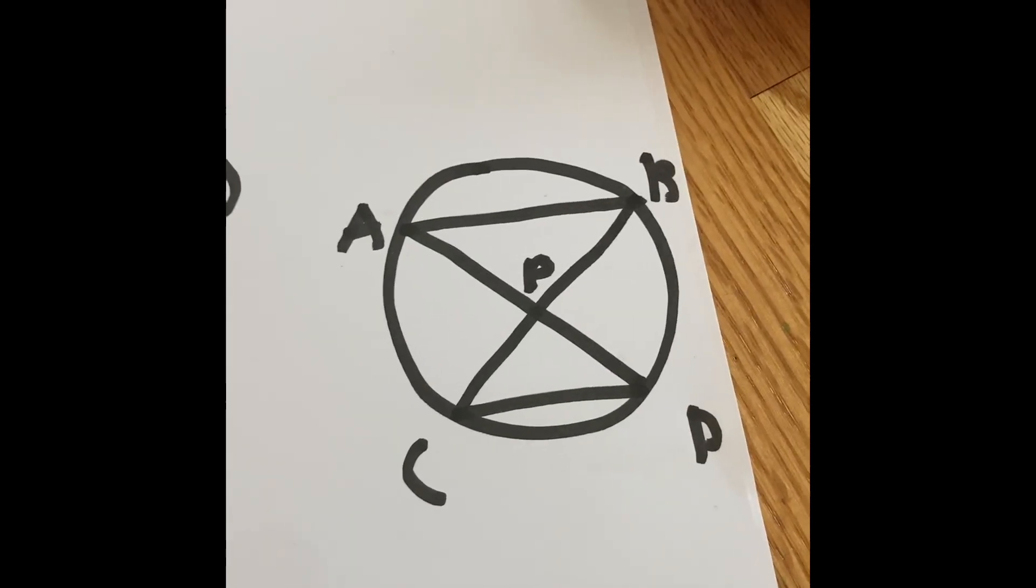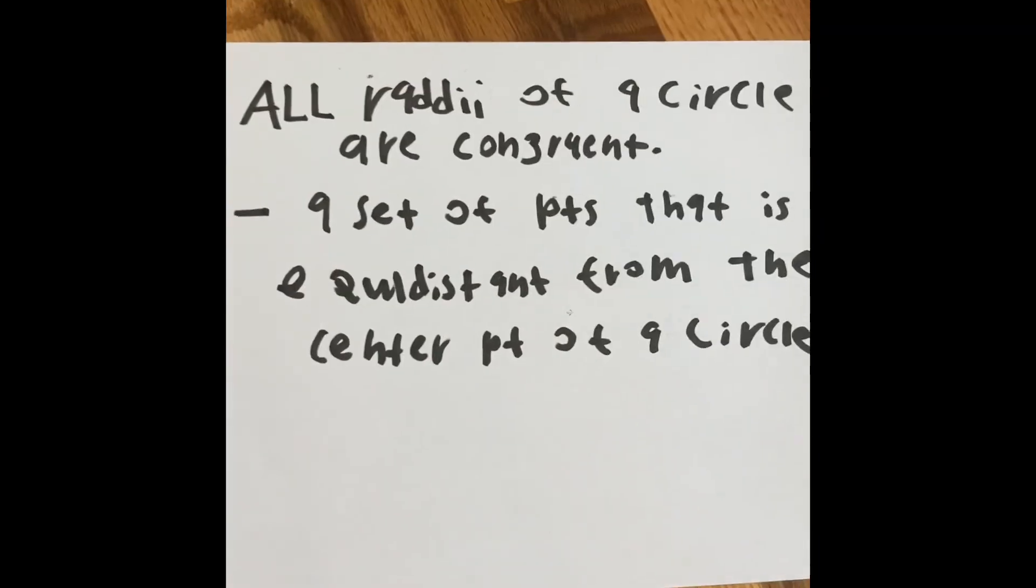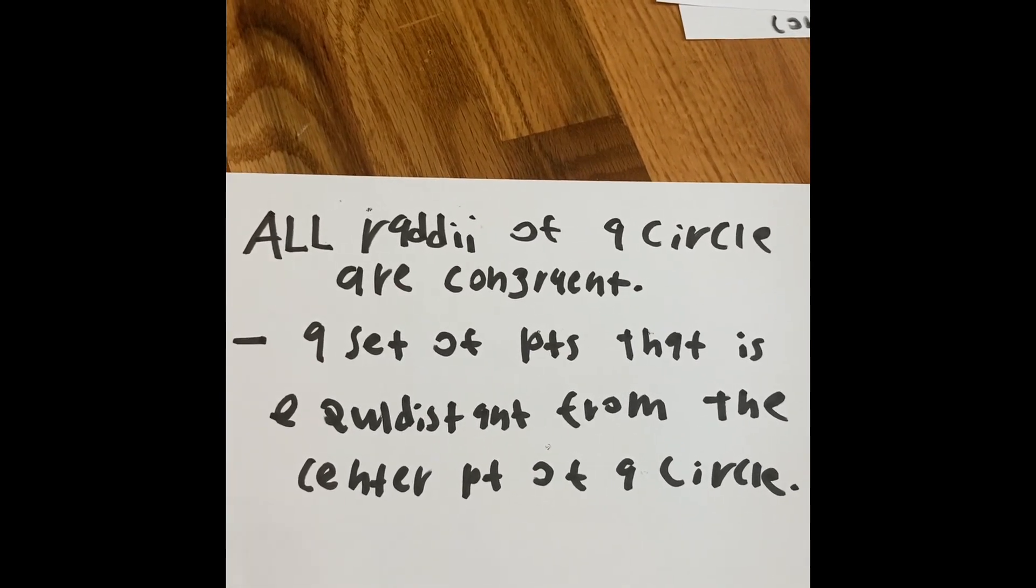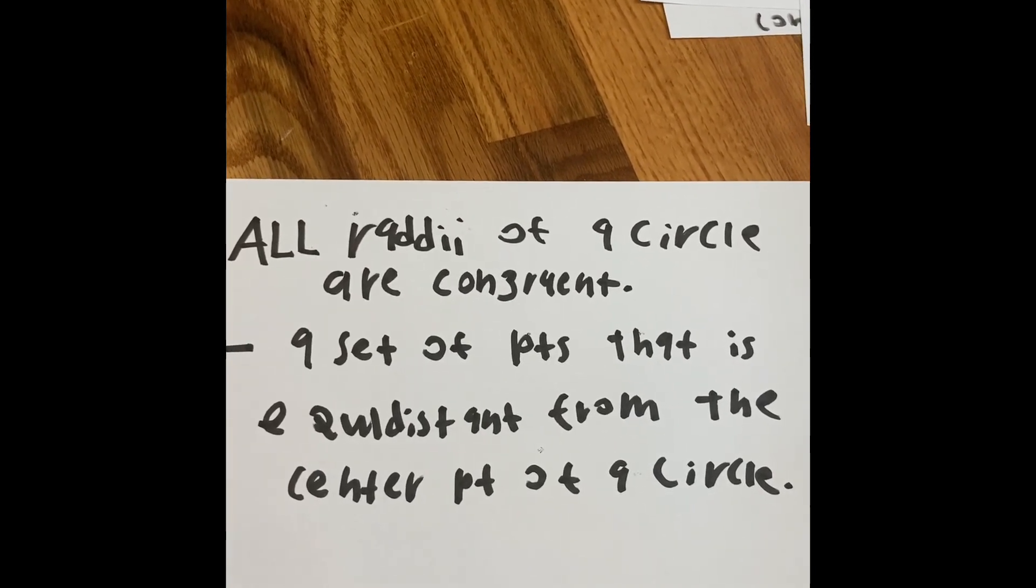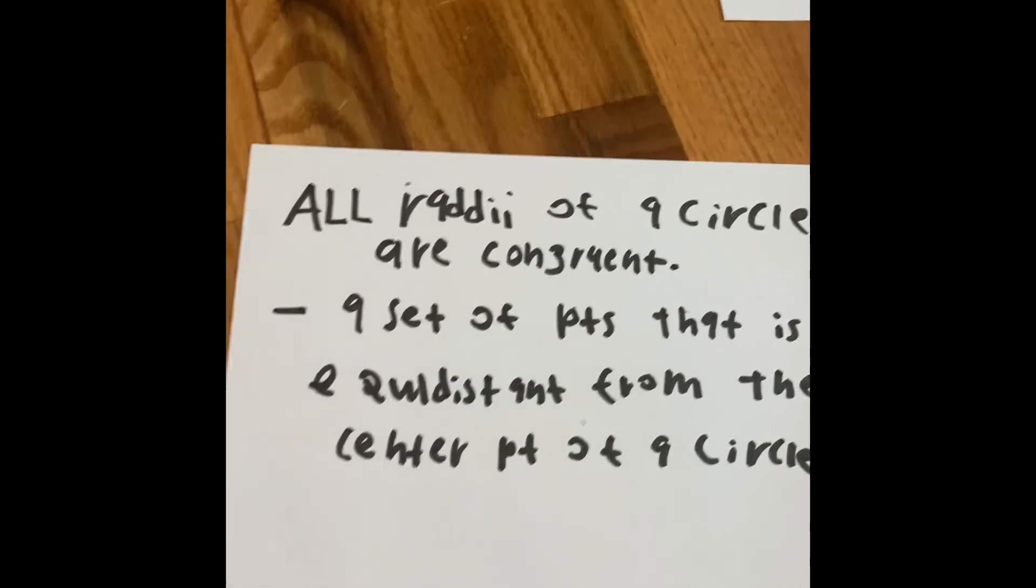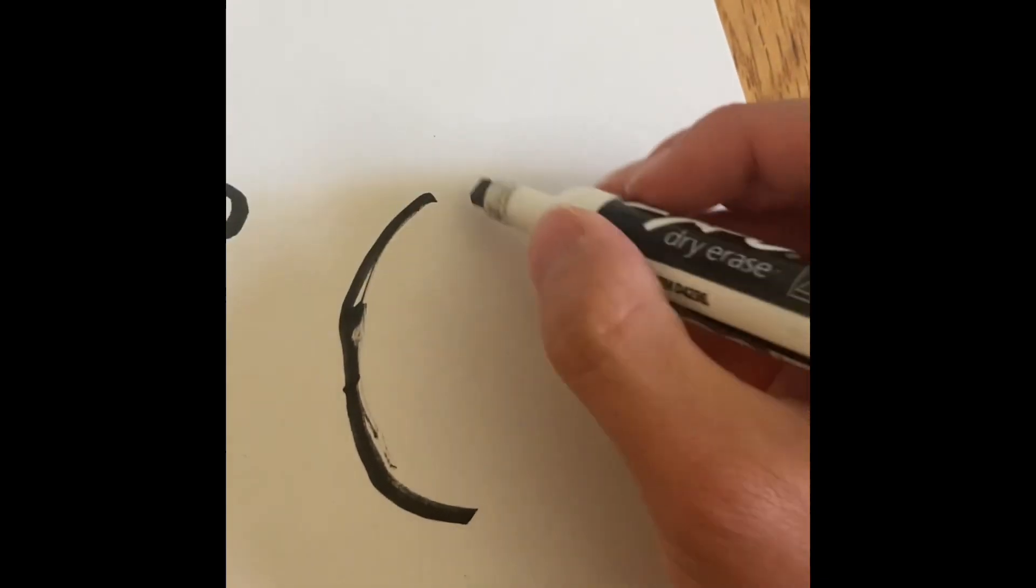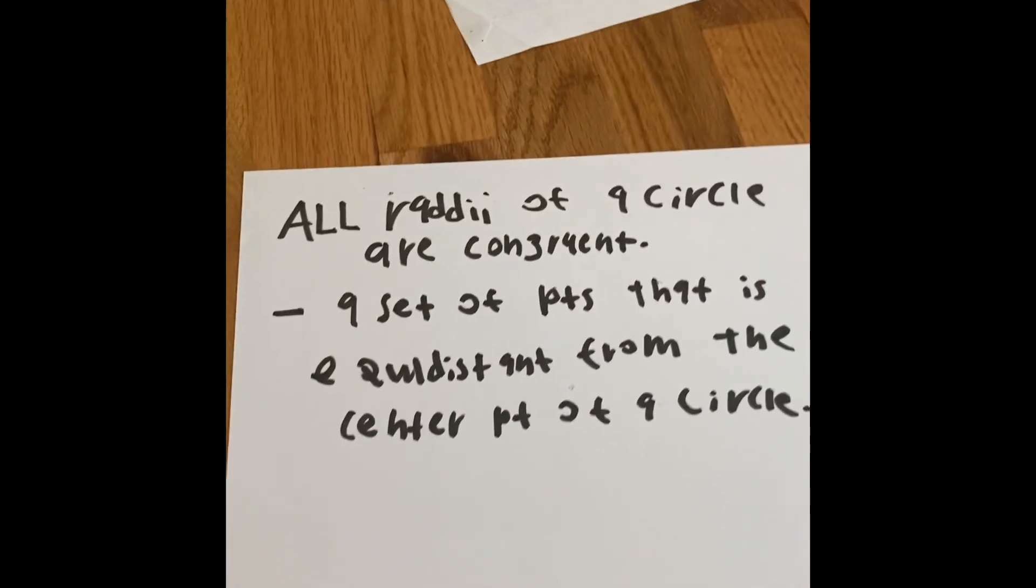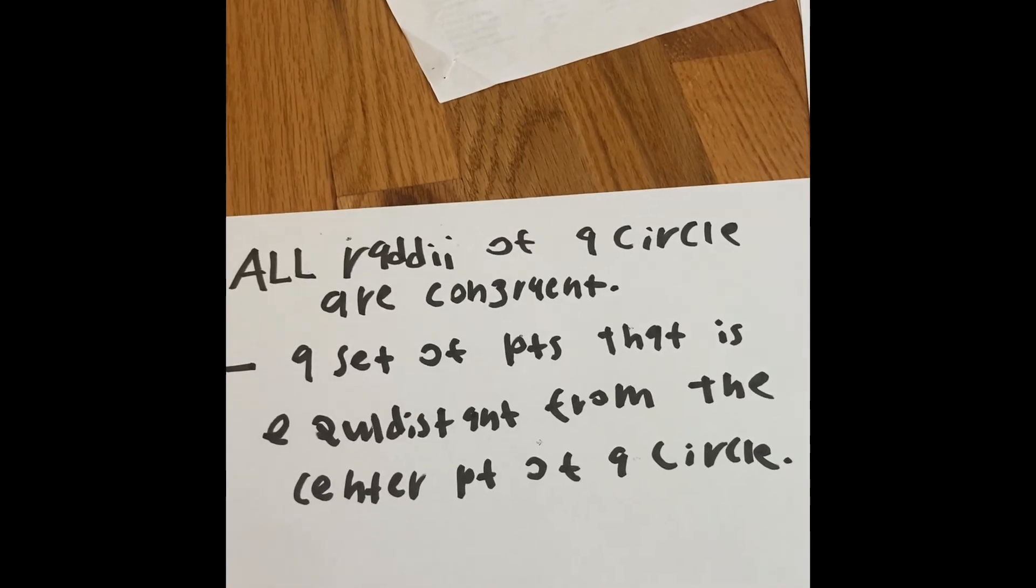Well, there is a theorem that we're going to check out. So, the theorem is, all radii of a circle are congruent, a set of points that is equidistant from the center point of a circle. So, what the theorem is literally saying is, let's say we draw our circle again. Who can draw a perfect circle? Type in the comments below if you think you can draw a perfect circle. Okay, so here is our circle. The theorem states that a set of points that is equidistant from the center point of a circle.